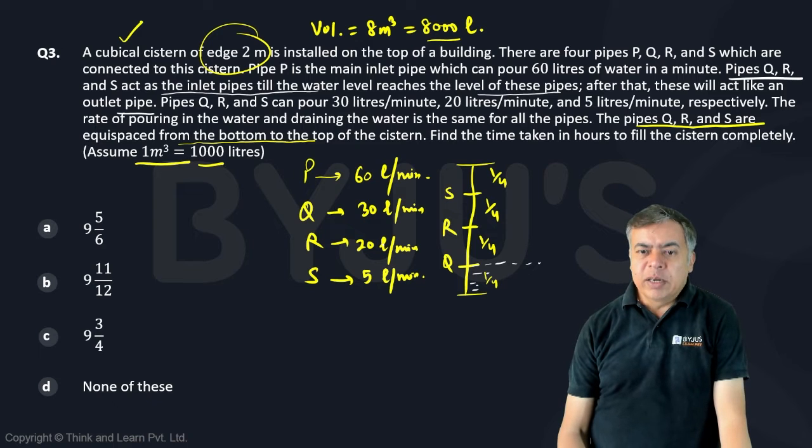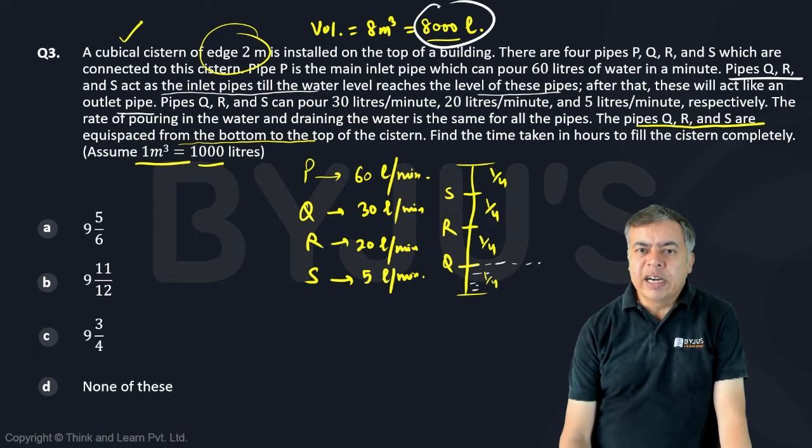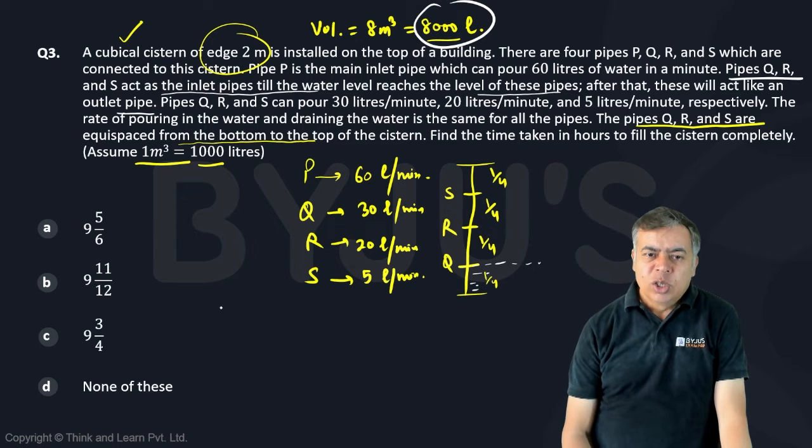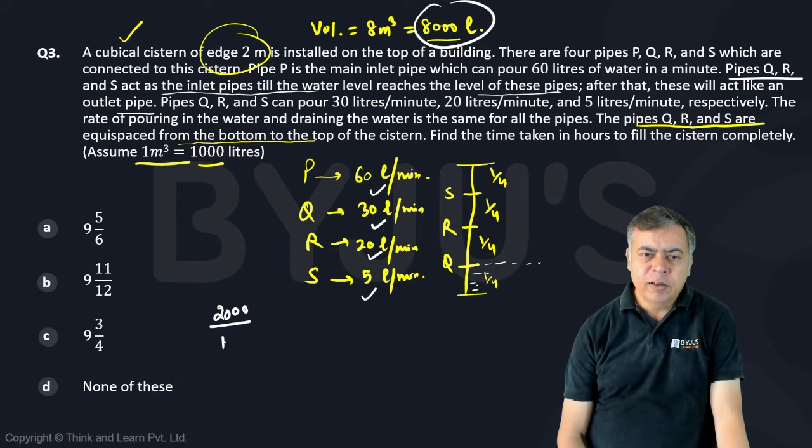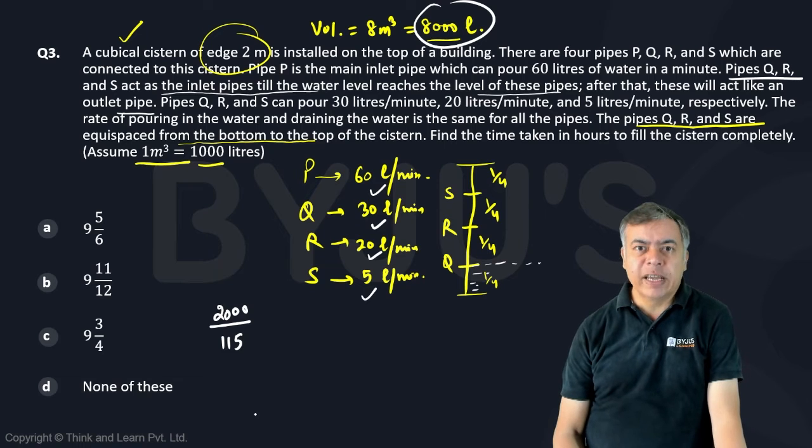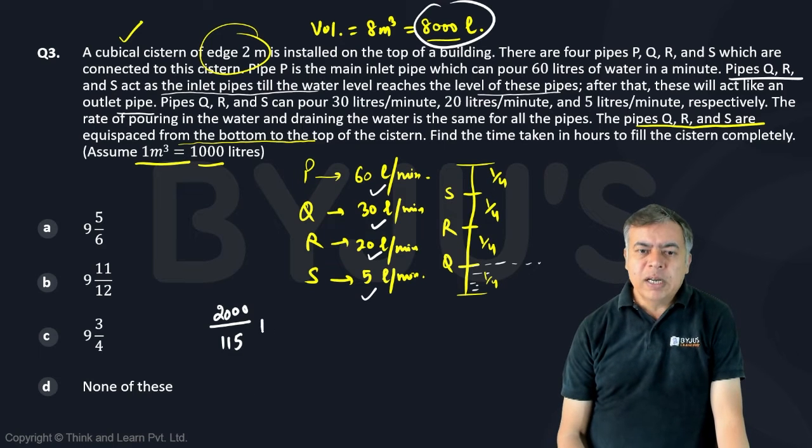So that means, can I say, if total was 8,000, so 2,000 litre was filled by all. So it is 60 plus 30 plus 20 plus 5. So this will become 90 and 115. So these many minutes it will take to fill one-fourth. But after that, now for the next quarter.